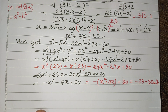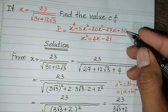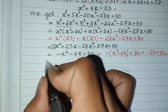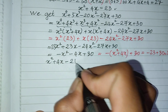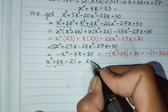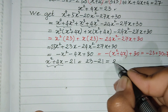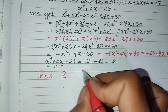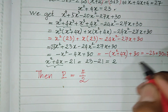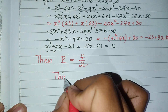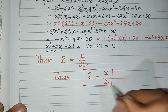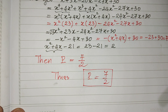For the denominator, h squared plus 4h minus 21, I replace h squared plus 4h with 23, giving 23 minus 21 equals 2. Therefore P equals 7 divided by 2 is our final answer. Thank you for watching. If you like my videos, please don't forget to subscribe to my channel for more exciting videos. See you in the next video, goodbye.